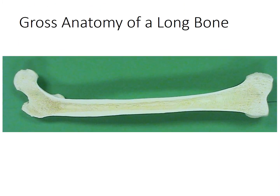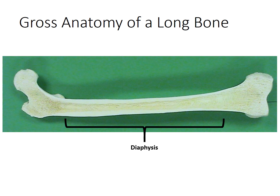Now let's look at the anatomy of a long bone on an actual human bone. This is a frontal section of the femur. Here we have the diaphysis — the region of the bone that makes up the shaft or central portion. Compact bone is the layer of bone tissue on the outer portion that makes up most of the diaphysis.